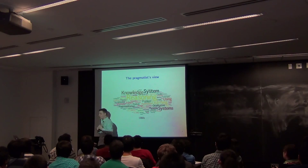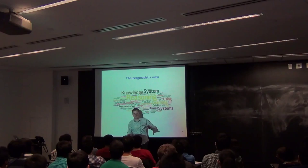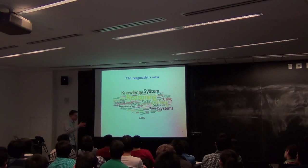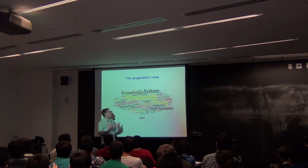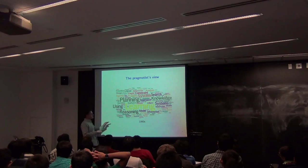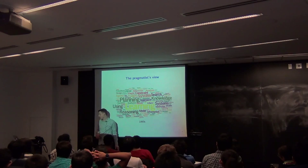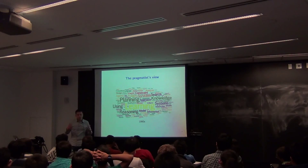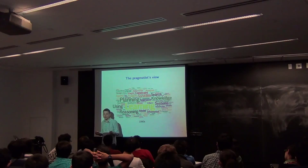I took all the titles of papers from these conferences and built word clouds. In the 80s, reasoning is the big thing — knowledge and systems dominate. Going further back there was a strong emphasis on reasoning, understanding, building systems and knowledge. Then in the 90s there's a shift away from knowledge — search, systems, and planning are still dominant, but learning really stands out. This is indicative of machine learning breaking out as a subfield of AI in the 80s and especially the 90s.